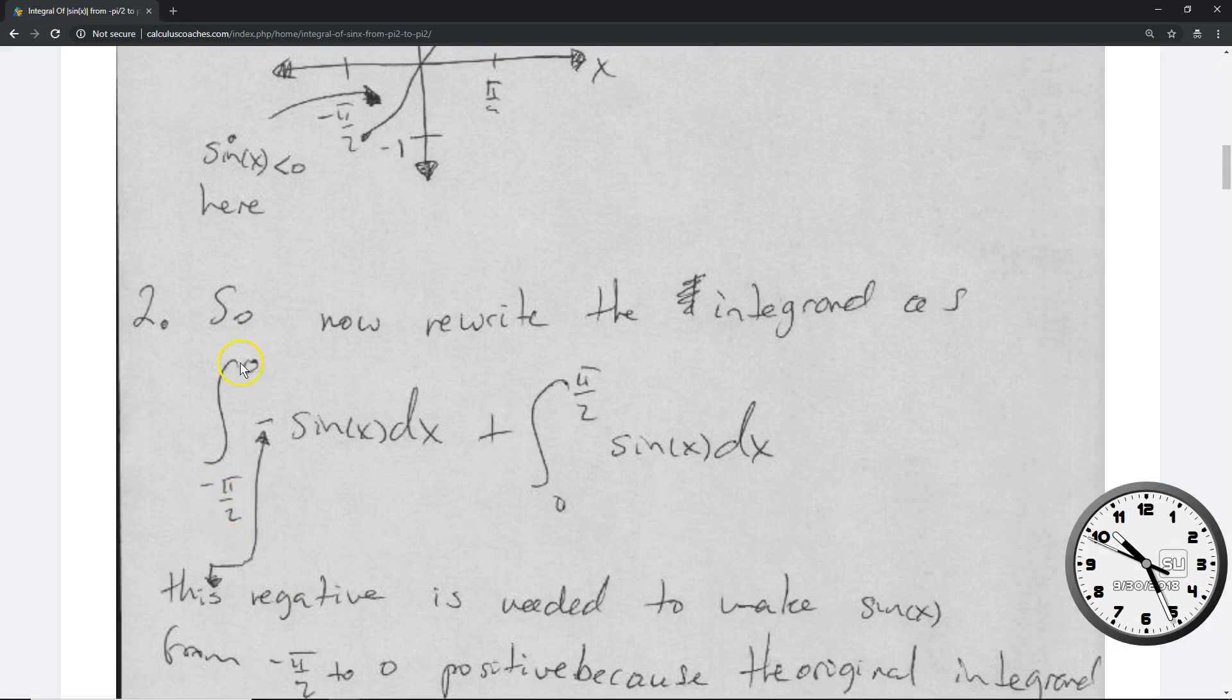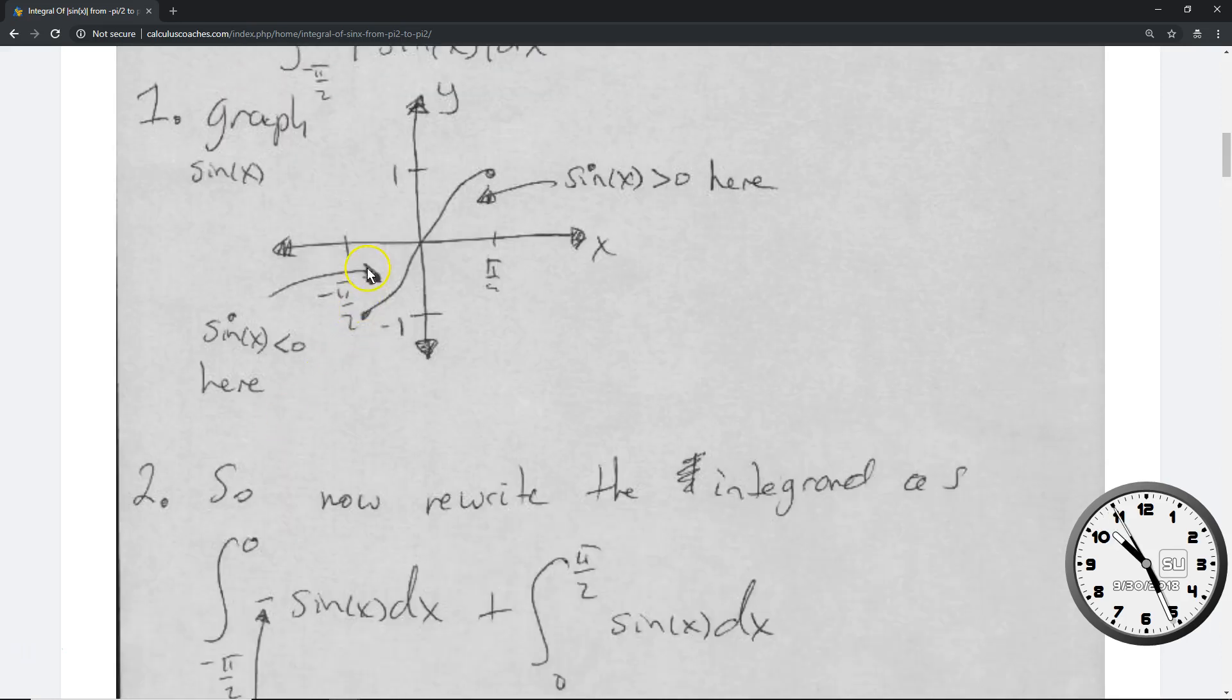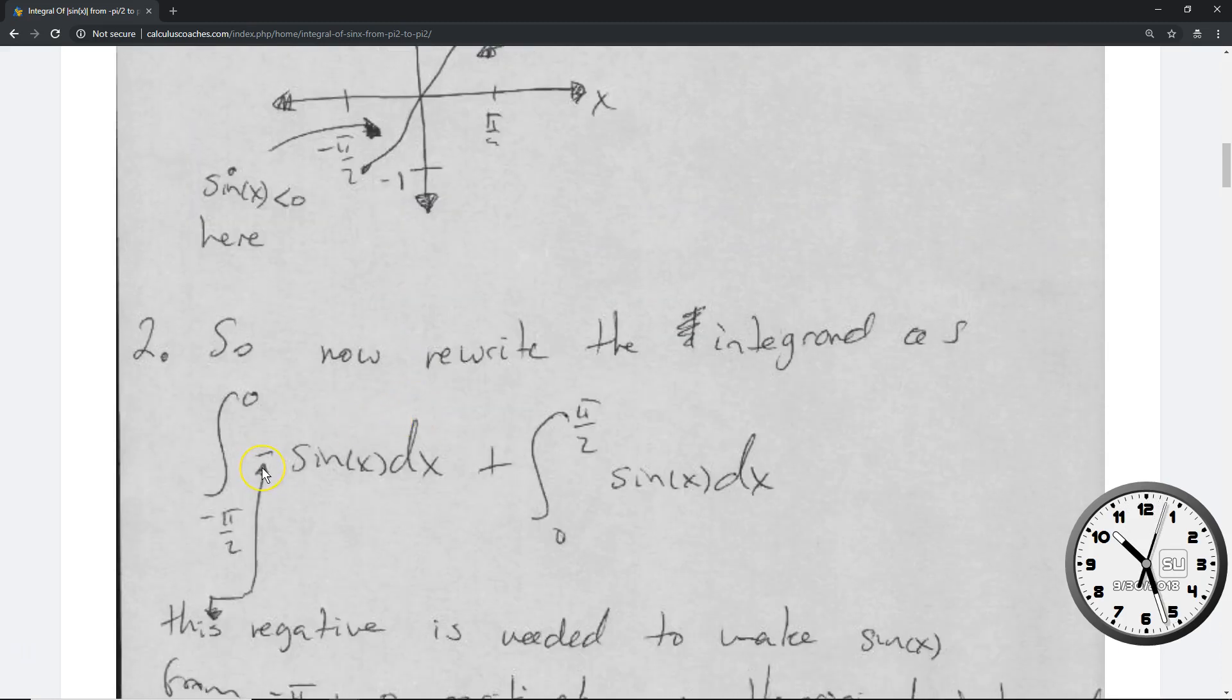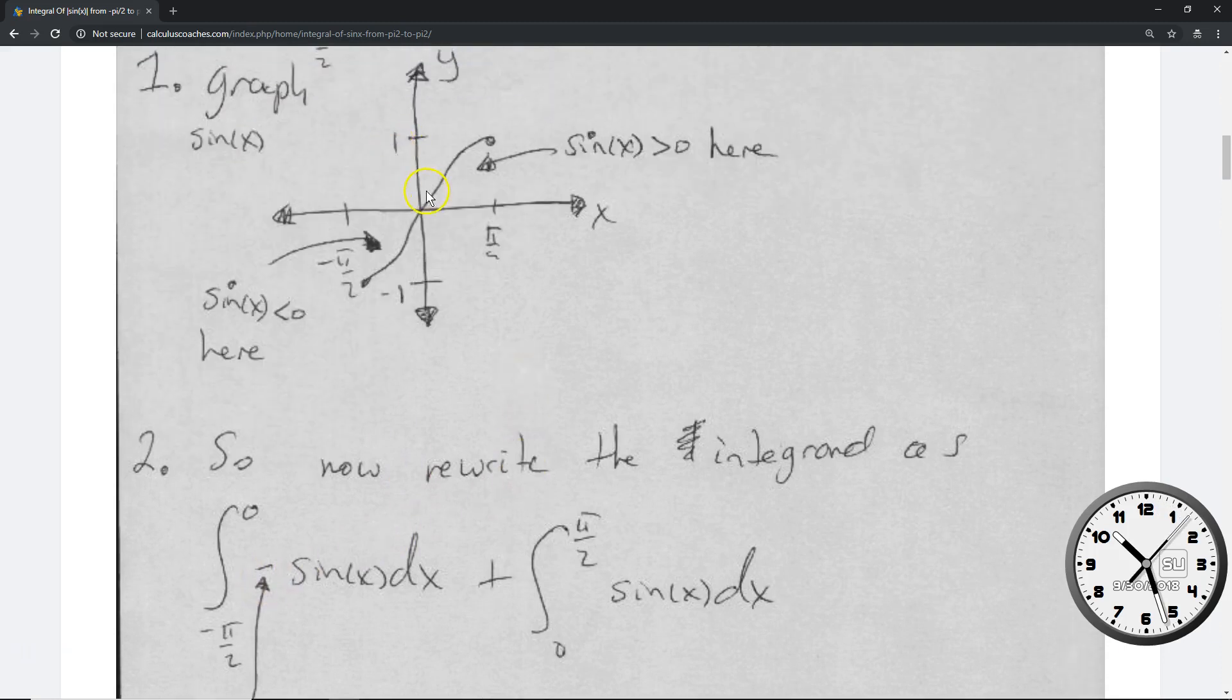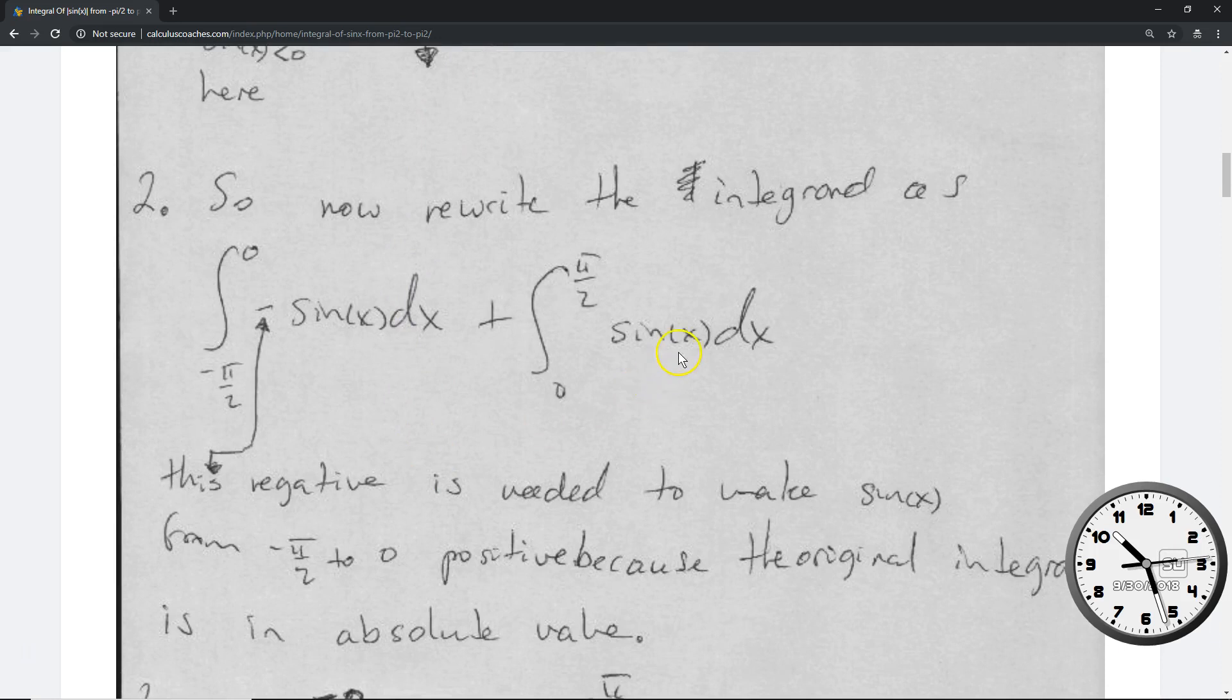You can write from negative pi over 2 to 0, and you place a negative sign in front of the sine function there. You have to do that because over here in the picture, sine of x is less than 0 in this range. So to take its absolute value, you put a negative out in front. The other portion from 0 to pi over 2, that's already positive, so you don't have to do anything. That looks as shown right here.